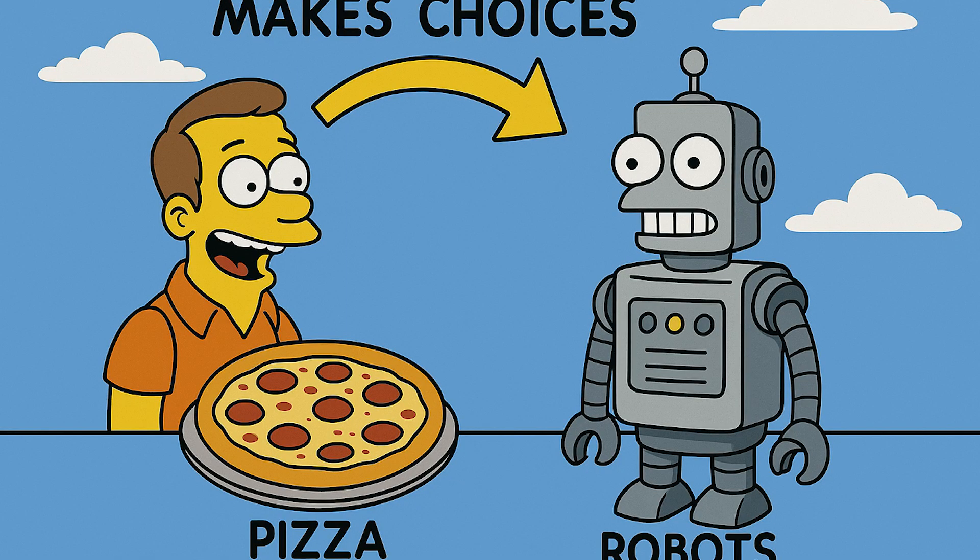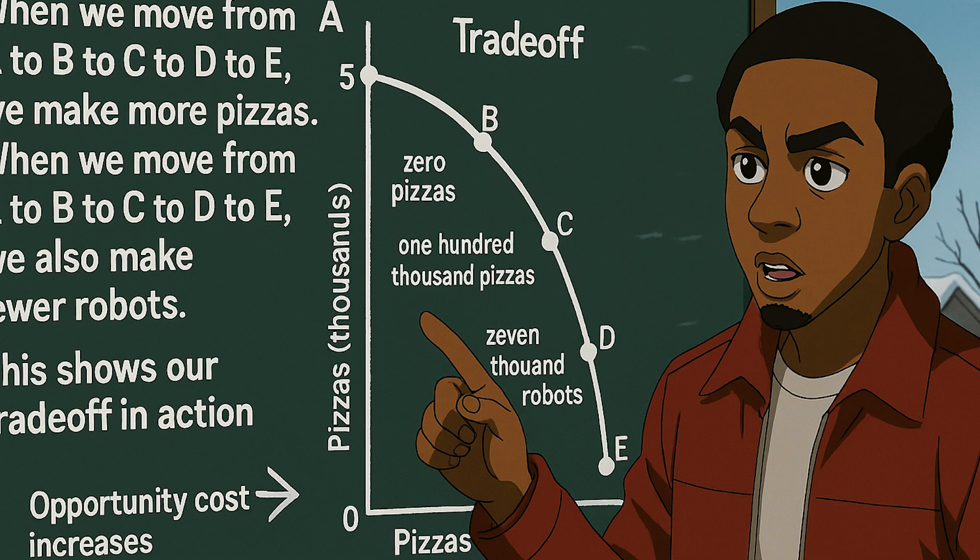Imagine an economy that can make only two things: pizzas and industrial robots. The production possibility curve, or PPC, shows the maximum combinations of pizza and robots possible when every worker and machine is being used well. During deep downturns, many people are out of work and manufacturers sit idle. On a graph, that is a point inside the curve — we'll call it U. At point U, the country is making fewer pizzas and fewer robots than it could.